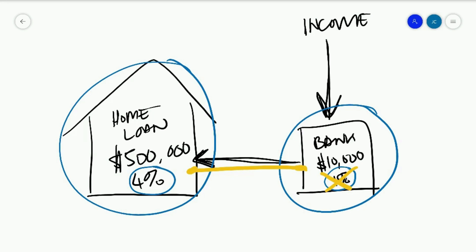So let's assume no more extra money came into this bank account for simplistic purposes. At the end of the month when the interest is calculated, this person would pay interest on $490,000. The $500,000 minus the $10,000, therefore pay interest on $490,000.